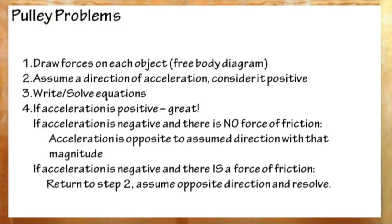To recap: when you have objects affected by forces, draw a free body diagram — draw all the forces on each object. Next, assume a direction of acceleration; it doesn't matter which way. Just assume the system accelerates in one direction and take that to be positive — everything going the other direction is negative. Then write equations and solve them. If you get a positive answer, the system is moving in the direction you assumed with that acceleration. If it's negative but there's no friction, the system is accelerating in the opposite direction with that magnitude. However, if you get a negative acceleration and there was friction, return to step two, assume the other direction, rewrite your equations, and solve again.